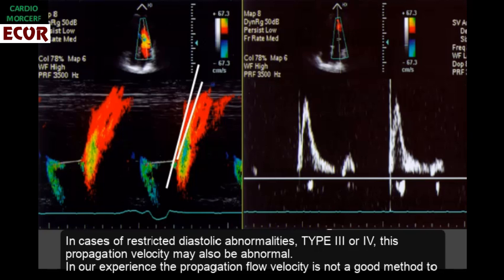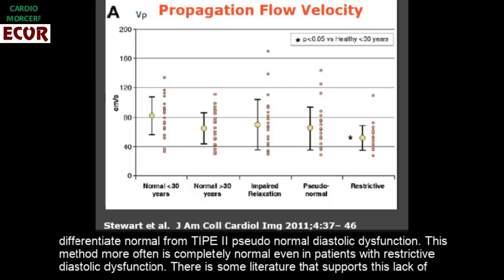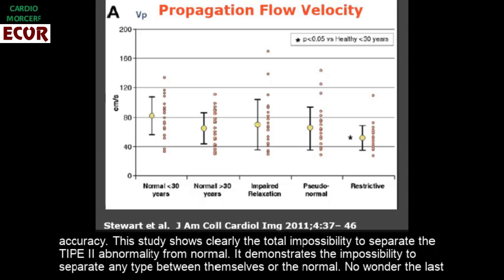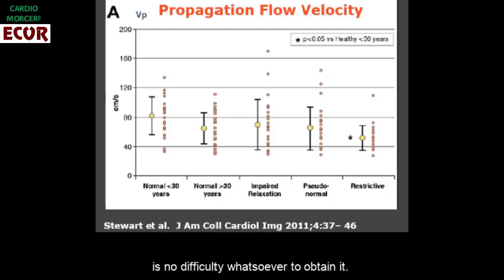In our experience, the propagation flow velocity is not a good method to differentiate normal from type 2 pseudonormal diastolic dysfunction. This method more often is completely normal even in patients with restrictive diastolic dysfunction. There is literature that supports this lack of accuracy. This study clearly shows the total impossibility to separate type 2 abnormality from normal, or any type between themselves or from normal. No wonder the last guidelines removed it from the utilized methods, claiming difficulty to obtain it — which seems a way to justify its presence in past guidelines while explaining its absence in the new ones, since there is no difficulty whatsoever to obtain it.